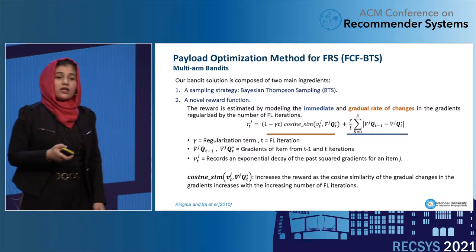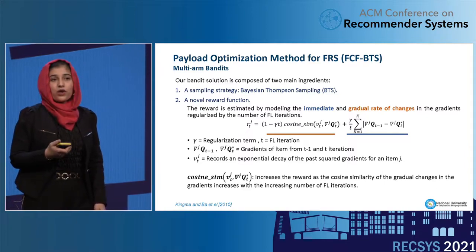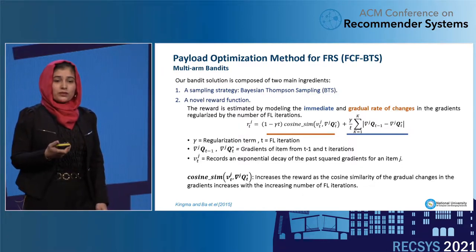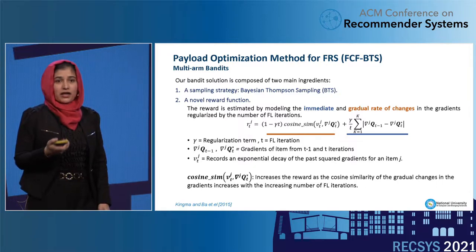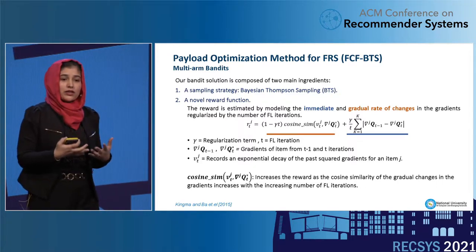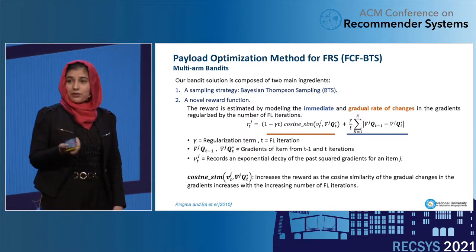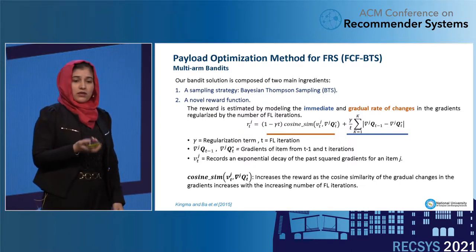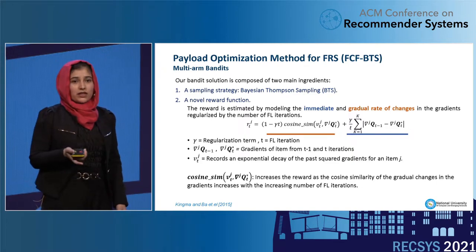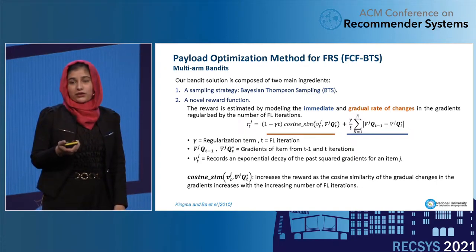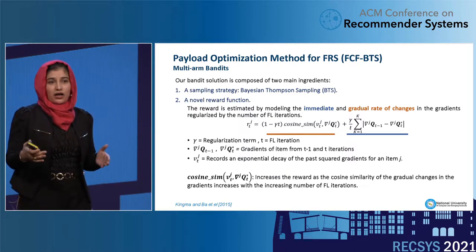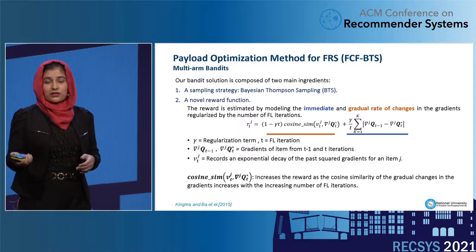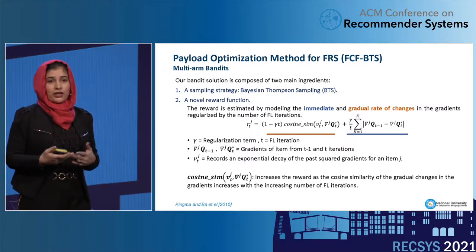Our proposed solution is composed of two main ingredients. First, a sampling strategy for optimal selection of items, for which we use well-known Bayesian-Thompson sampling — details can be found in our paper. Second, a reward function based on feedbacks gathered from FL users. This reward is the change in gradients, regularized by the number of FL iterations, where gamma represents the regularization term, T represents the iteration, and Qt-1 and Qt are the gradients from the previous and current iterations, with an exponential decay of past scaled gradients. During initial FL iterations, only items whose gradient changes are large are selected, whereas in later phases, items are selected based on the overall similarity of gradients to favor convergence.